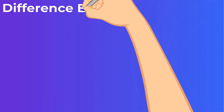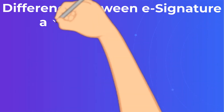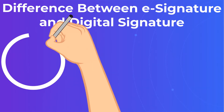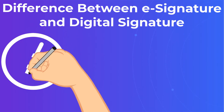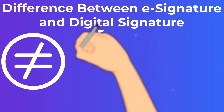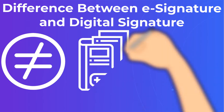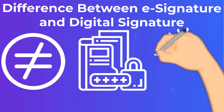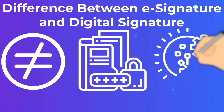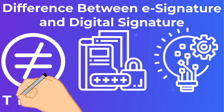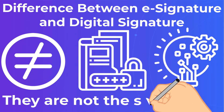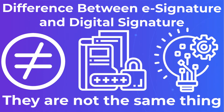Difference between e-signature and digital signature. It is easy to get confused when you compare an electronic signature with a digital signature, but they are not the same thing. To build signature software like DocuSign, you have to be able to tell the differences between both. An electronic signature is the actual sign of identification on a document, while a digital signature is the encryption technology that secures e-signatures.